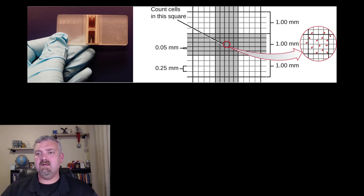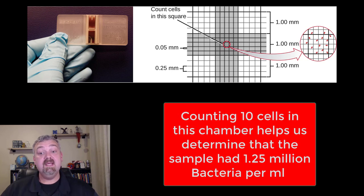So here in the example given in the book, you count 10 cells inside that square and that means there was 10 cells in the sample in 0.00008 milliliters. So in the end you run the math and by counting 10 cells in this little chamber you would know that on average there were 1.25 million bacterial cells in a milliliter of the original sample.